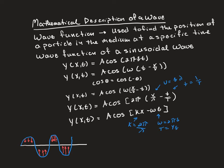The wave function is used to find the position of a particle in the medium at a specific time. Even though the wave is traveling forward, the actual particles that make up the medium are oscillating back and forth — they're staying in place. For a transverse wave in the x-direction, they're only oscillating up and down in the y-direction.